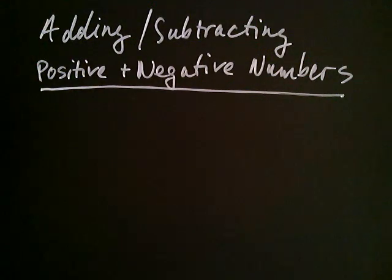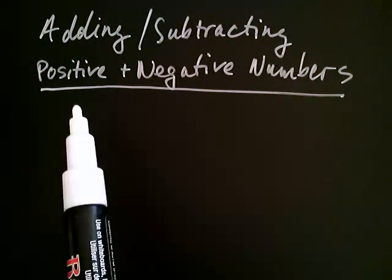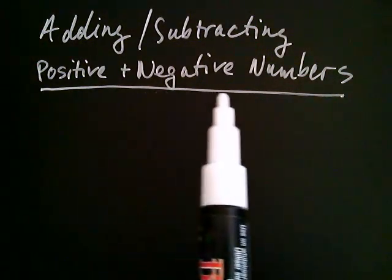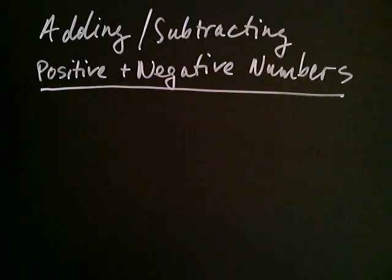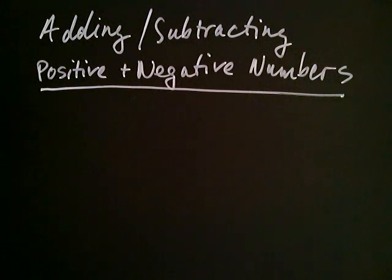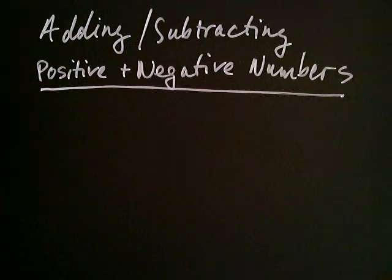Let's take a look at how to add and subtract positive and negative numbers. We're going to divide the situation into two cases. The first case is when you're adding two numbers together, and the second case is when you're subtracting two numbers.